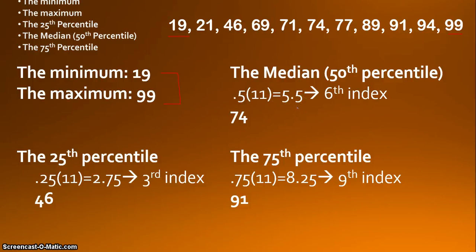And we get the number 5.5 for our index. Of course, when we get a decimal, we round up. So we round to 6 for our index value. And so we're going to find the number in the sixth position. 1, 2, 3, 4, 5, 6. 74. 74 is the median of the data set.